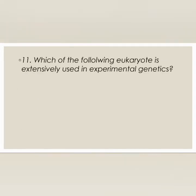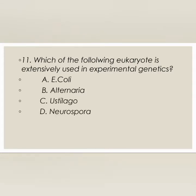Next question: which of the following eukaryotes is extensively used in experimental genetics — E. coli, Alternaria, Ustilago, or Neurospora? The correct answer is option D: Neurospora.